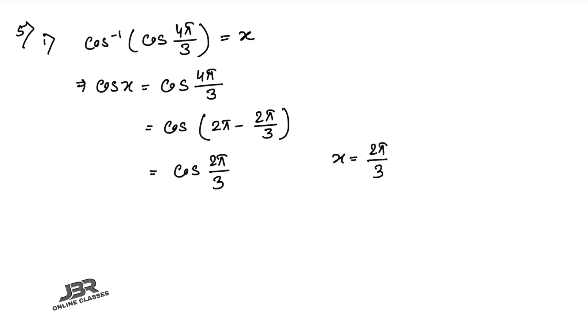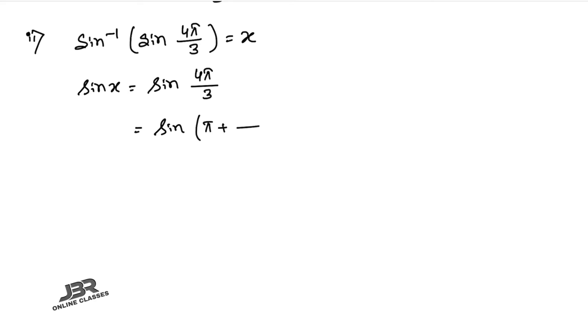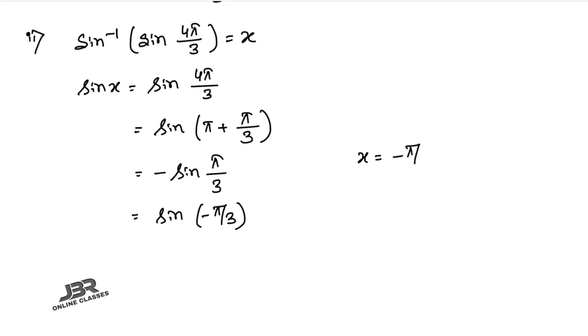Sum number 5.2: sin⁻¹(sin(4π/3)) = x, so sin x = sin(4π/3). Writing 4π/3 = π + π/3 and using sin(π + θ) = −sin(θ), we get −sin(π/3) = sin(−π/3). Therefore x = −π/3.